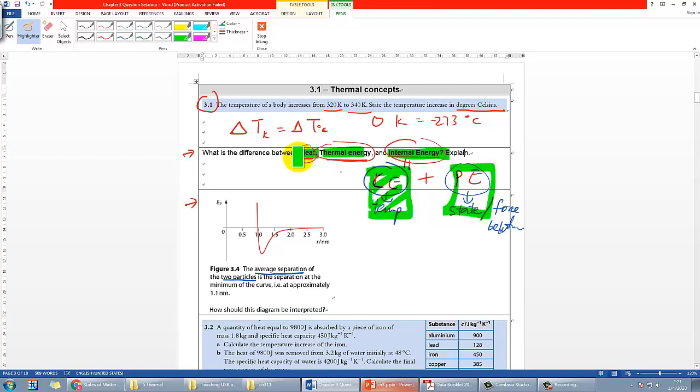Maybe by the time when you change the temperature to 100 degrees Celsius, then the energy, which is the thermal energy, which is the heat from the external source, would then transfer the energy in the form of potential energy. Both of these of course would contribute to the internal energy, but I hope you can distinguish the difference between these terms.